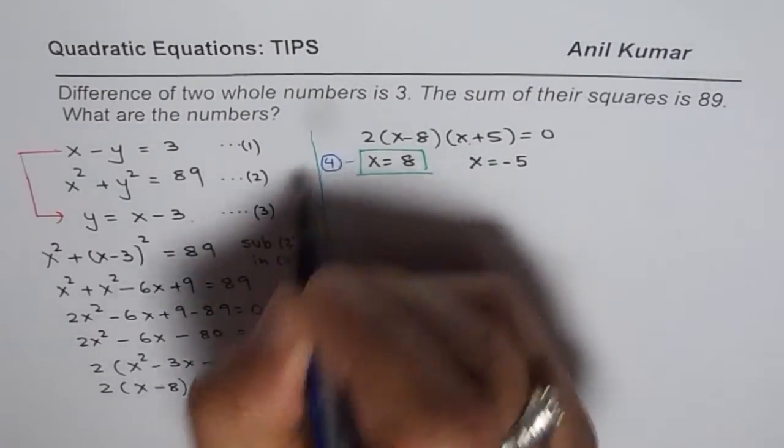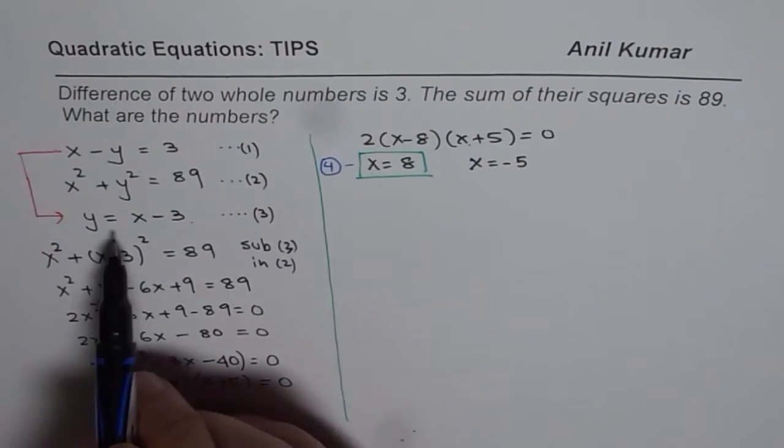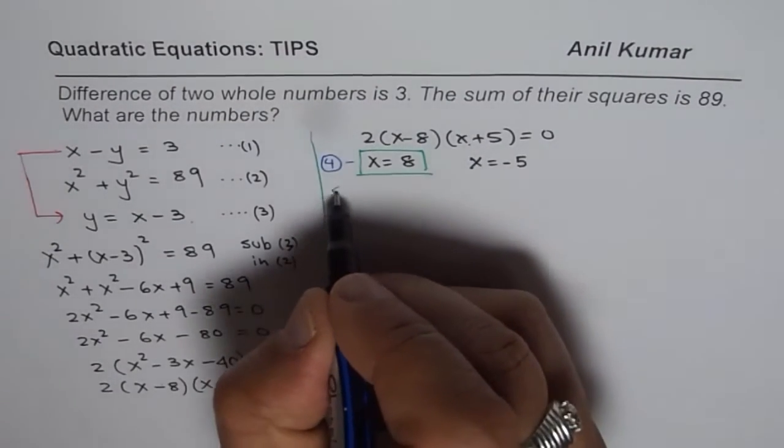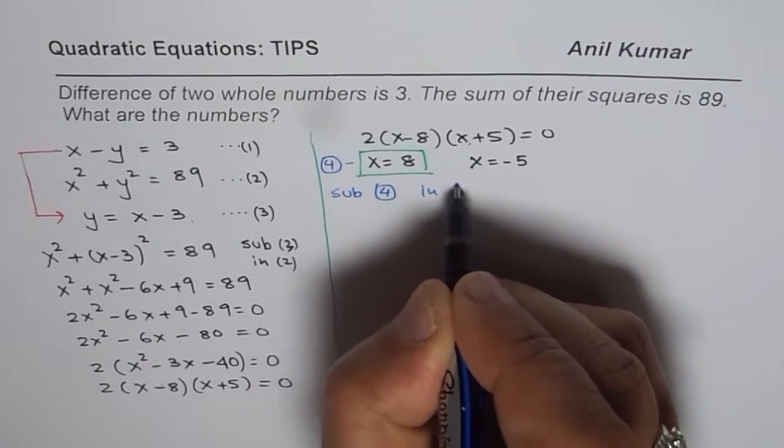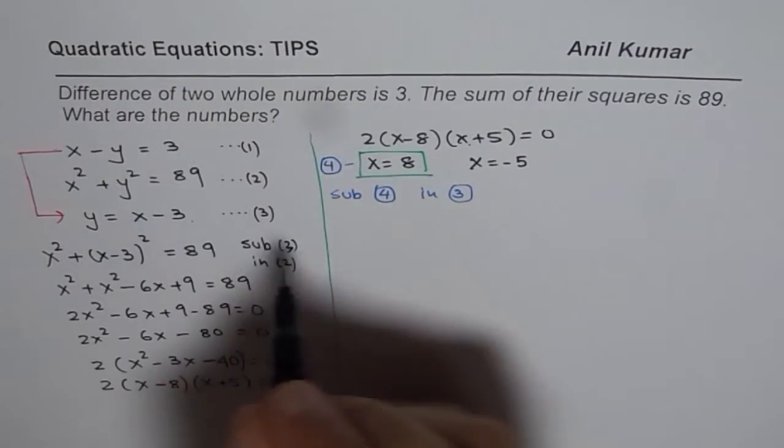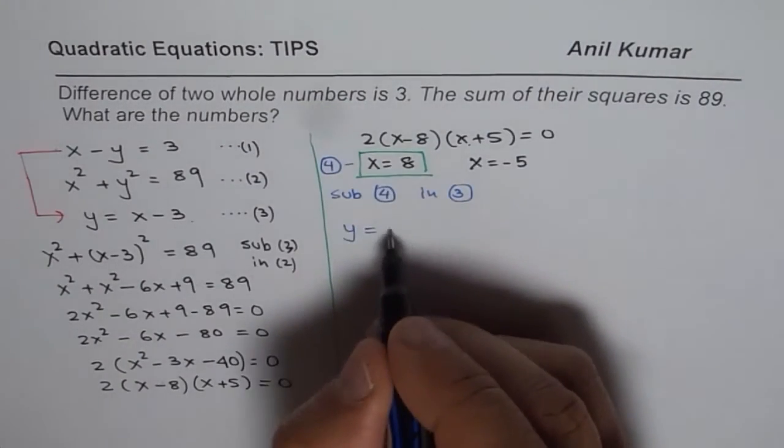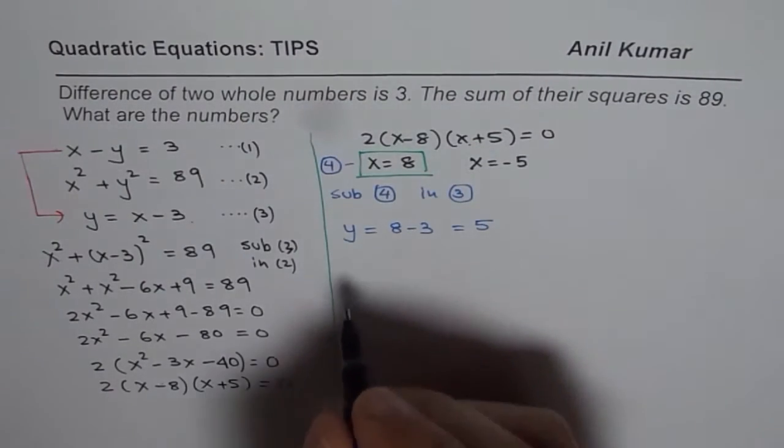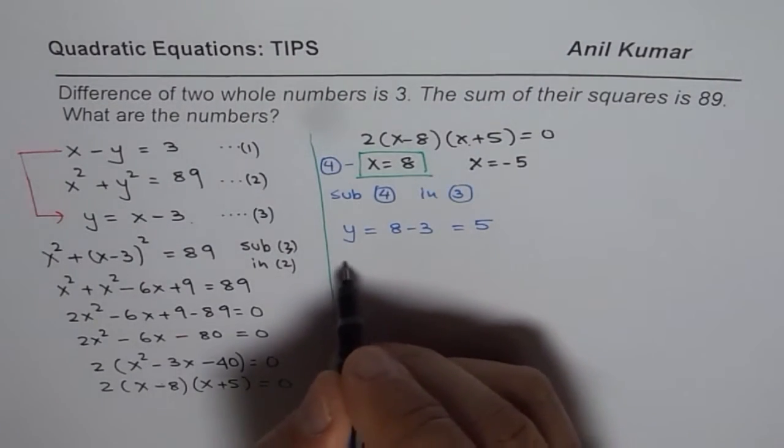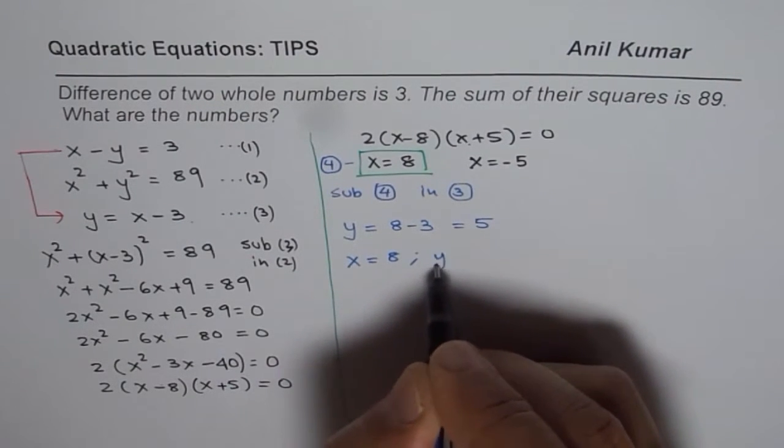So that is x equals 8. We will call this as 4 as our solution. Now we will substitute x equals 8 in equation 3. So if we sub 4 in 3, we get the value of y equals x minus 3. That means 8 minus 3, which is 5. So we get two numbers. Now we know that the two numbers are x equals 8 and y equals 5.